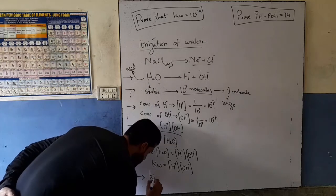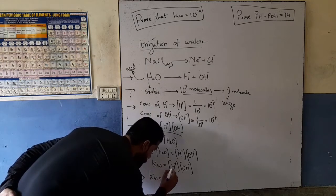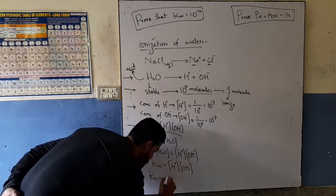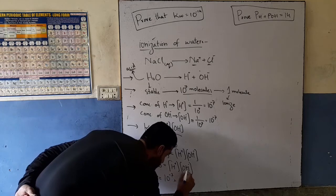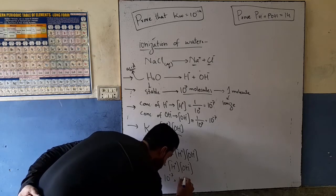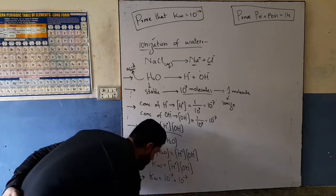Kw is equal to 10 to the power minus 7 multiplied by 10 to the power minus 7.